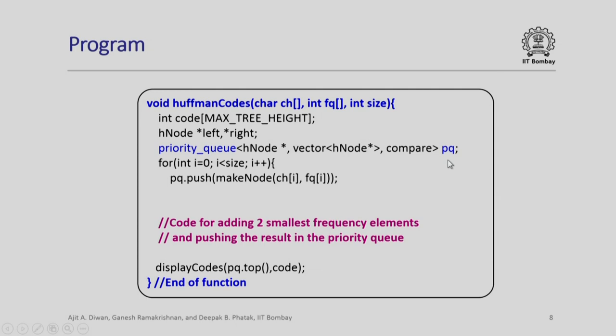What we do? Up to the size we simply push into PQ by making make node each individual character in its frequency that we have got. Please note that the char array and its corresponding frequency is given as parameter and the size is given as a parameter.